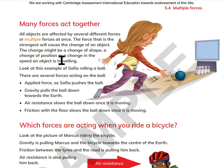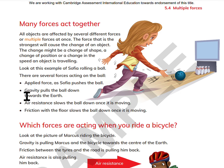Look at this example of Sophia rolling a ball. There are several forces acting on the ball. A great force as Sophia pushes the ball. Gravity pulls the ball down towards the earth. Air resistance slows the ball down once it is moving. Friction with the floor also slows the ball down once it is moving.